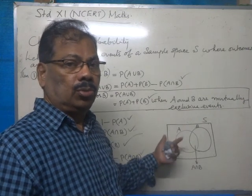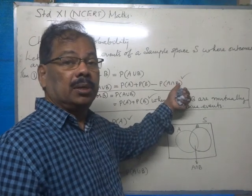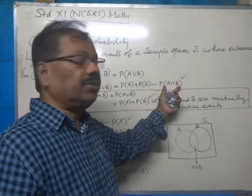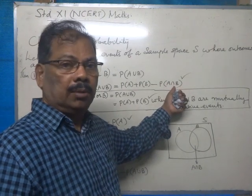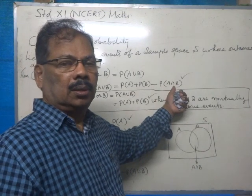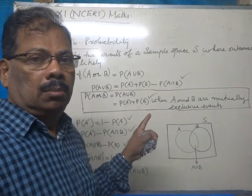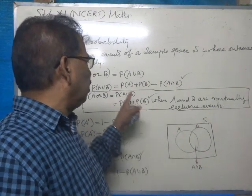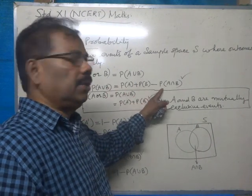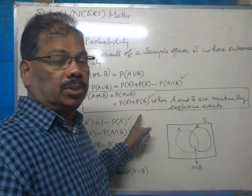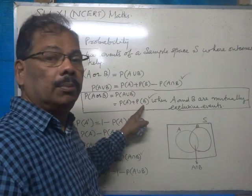Suppose A and B are mutually exclusive — what happens? Probability of A intersection B will be zero, because there won't be any intersection. When A and B are not mutually exclusive, we use the formula: P(A∪B) = P(A) + P(B) - P(A∩B). And if they are mutually exclusive, probability of A union B will be equal to P(A) plus P(B).